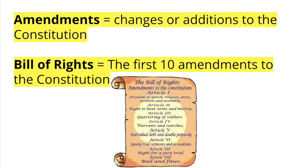At the end of the Constitution are a list of amendments, which are changes or additions to the Constitution. The first 10 amendments were added all at the same time in 1791, when the Constitution was still brand new. Those first 10 amendments are called the Bill of Rights — that's the document we're going to study today.